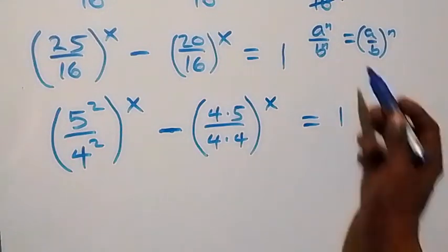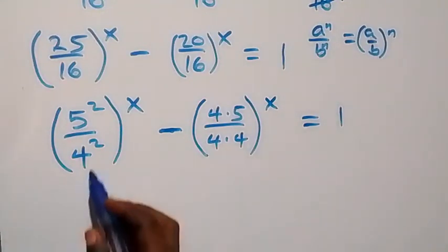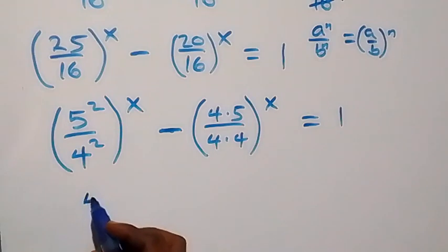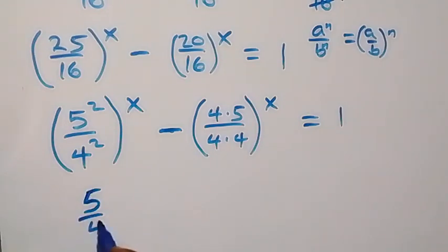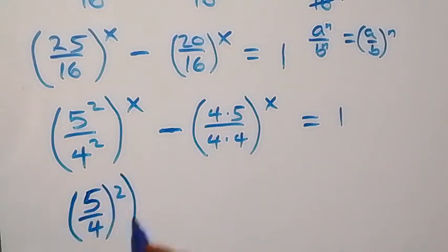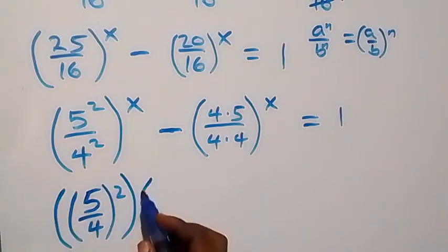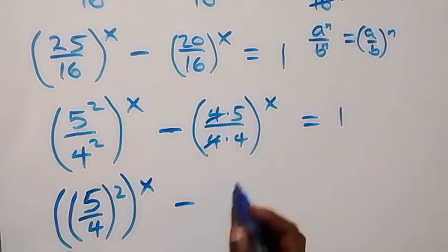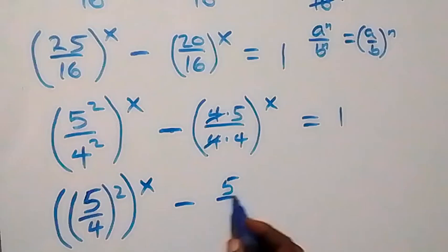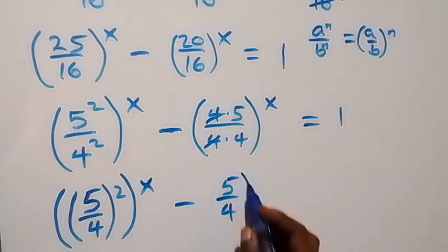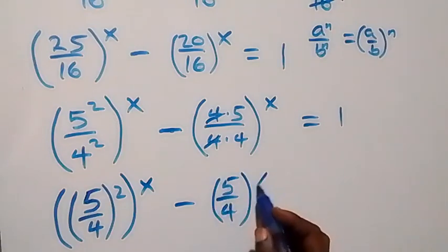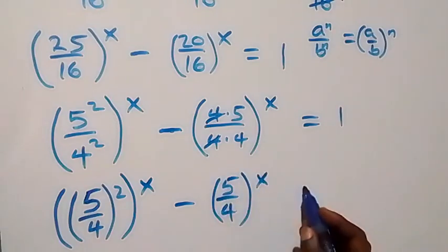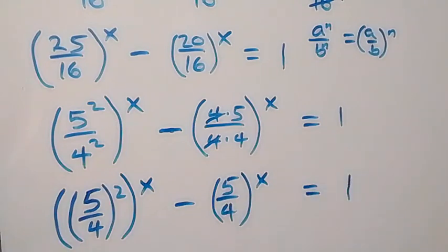Following the law of indices again, we can write (5²/4²)^x as (5/4)² raised to power x. For the second term, the 4s cancel and we are left with (5/4) raised to power x. So we have (5/4)^(2x) minus (5/4)^x equals 1.